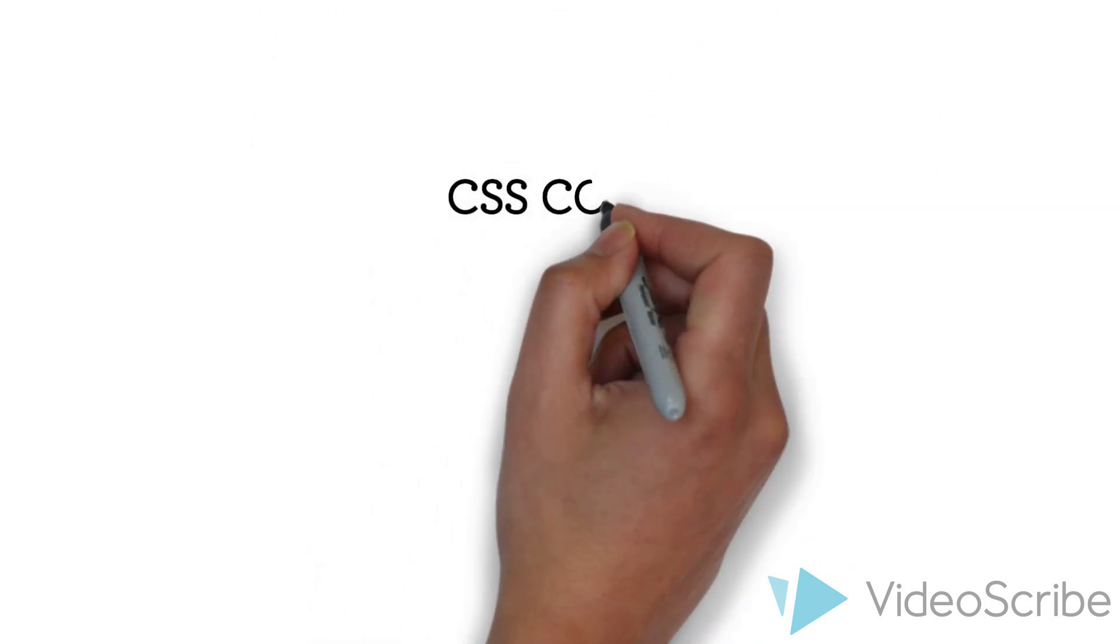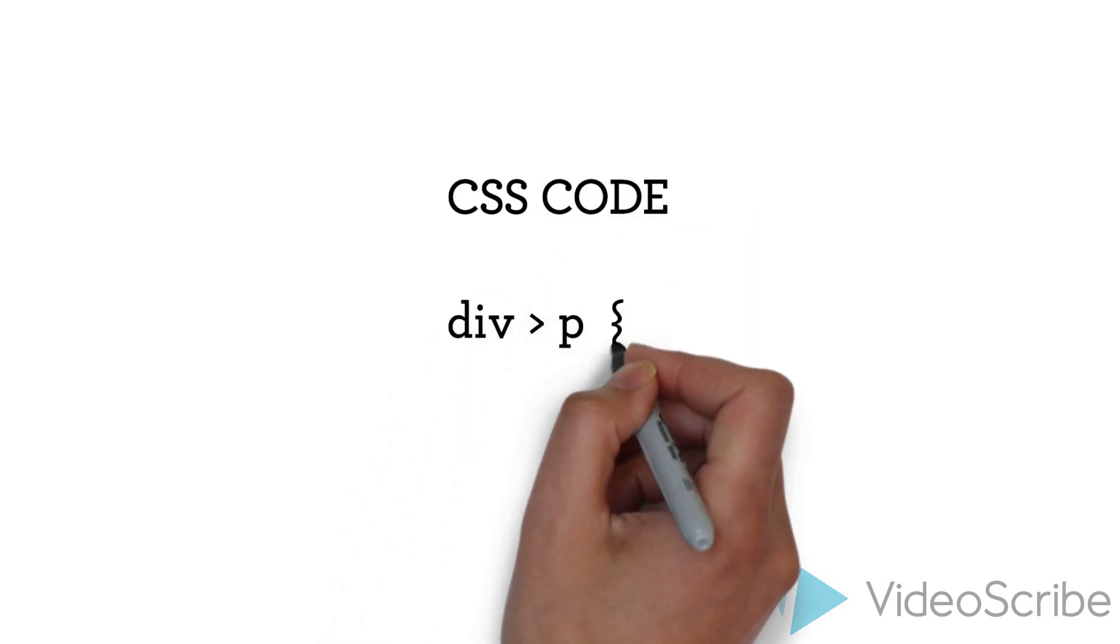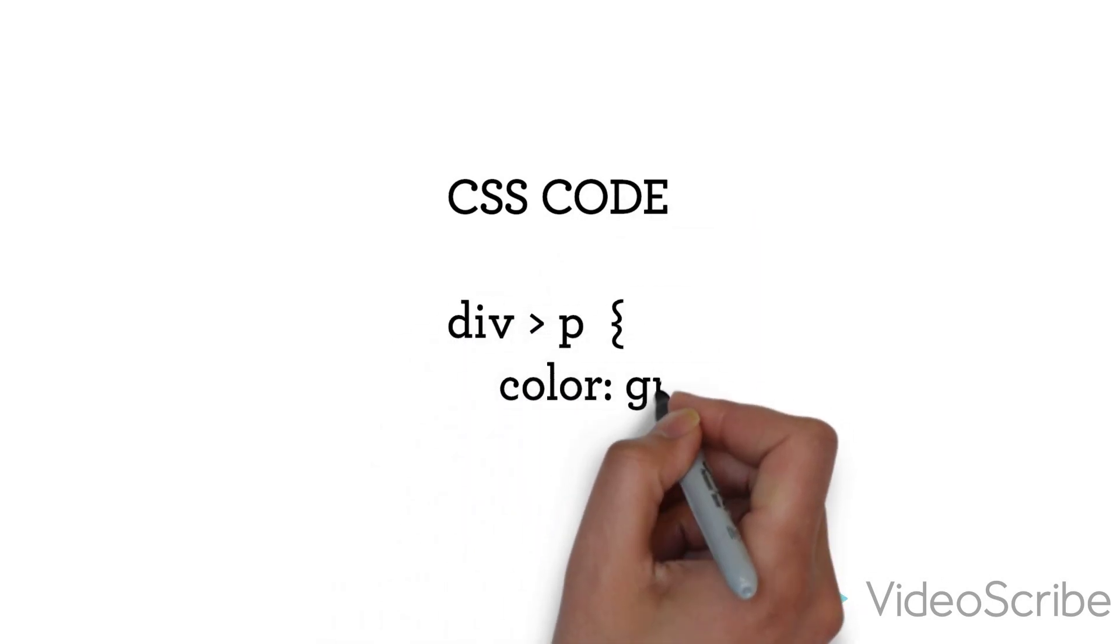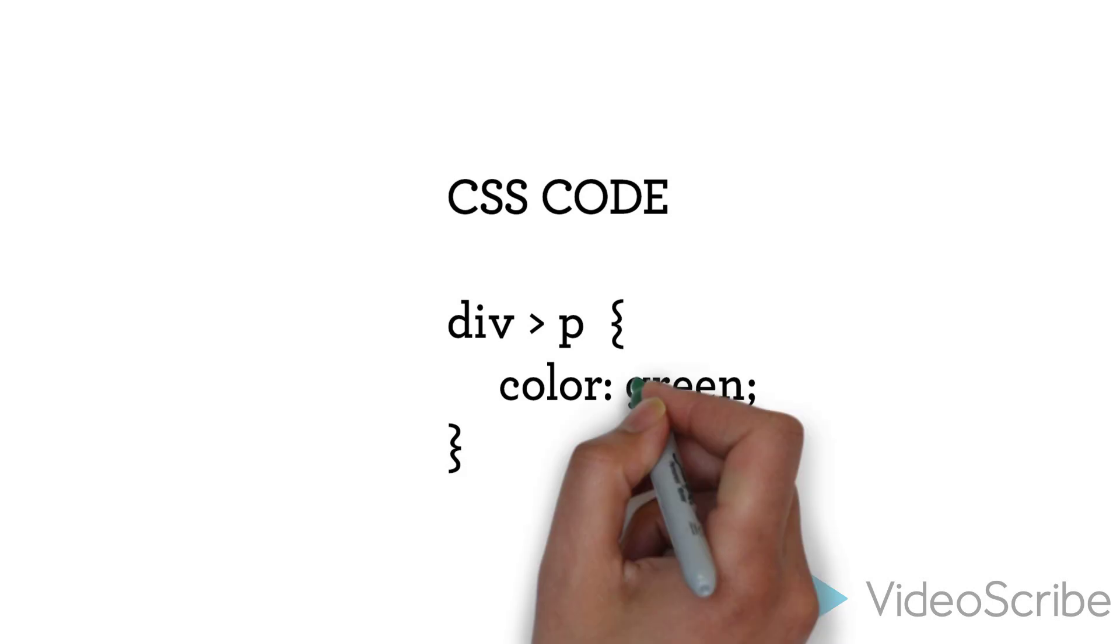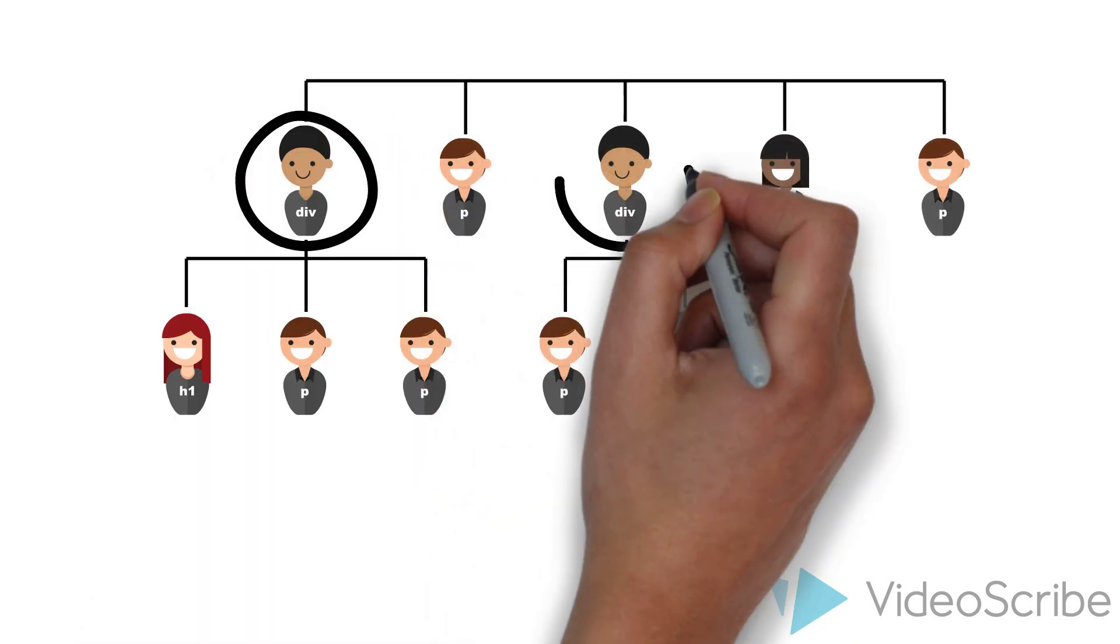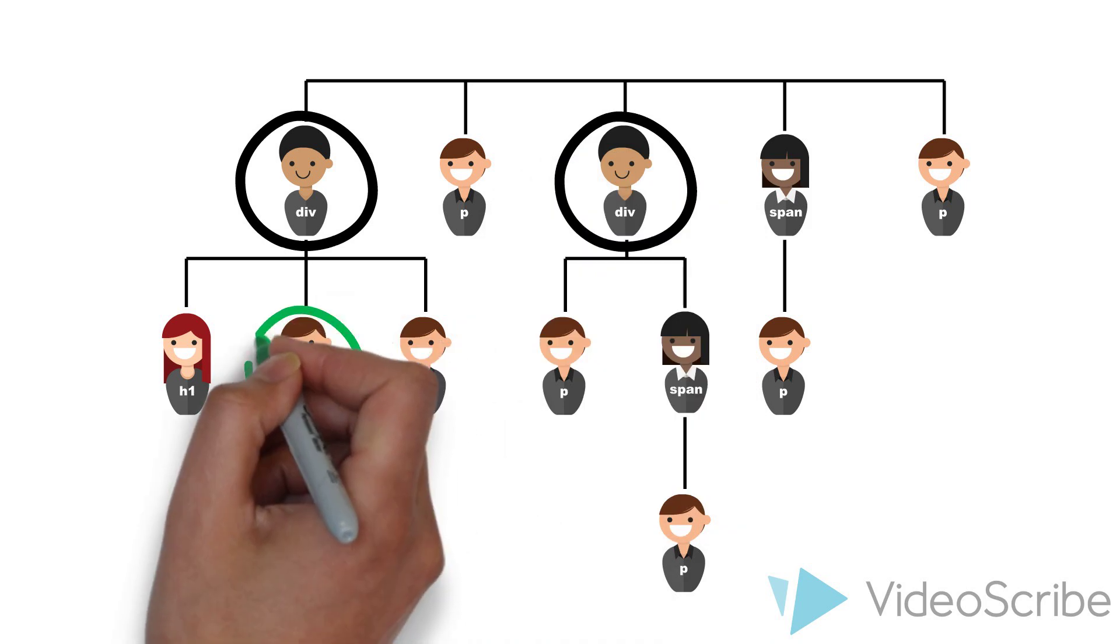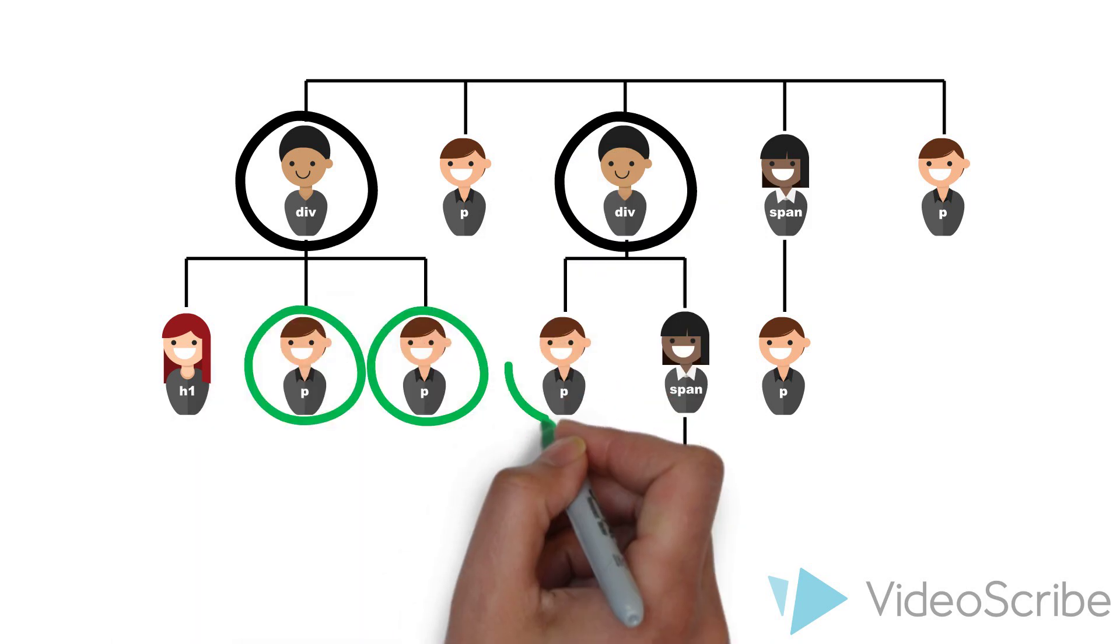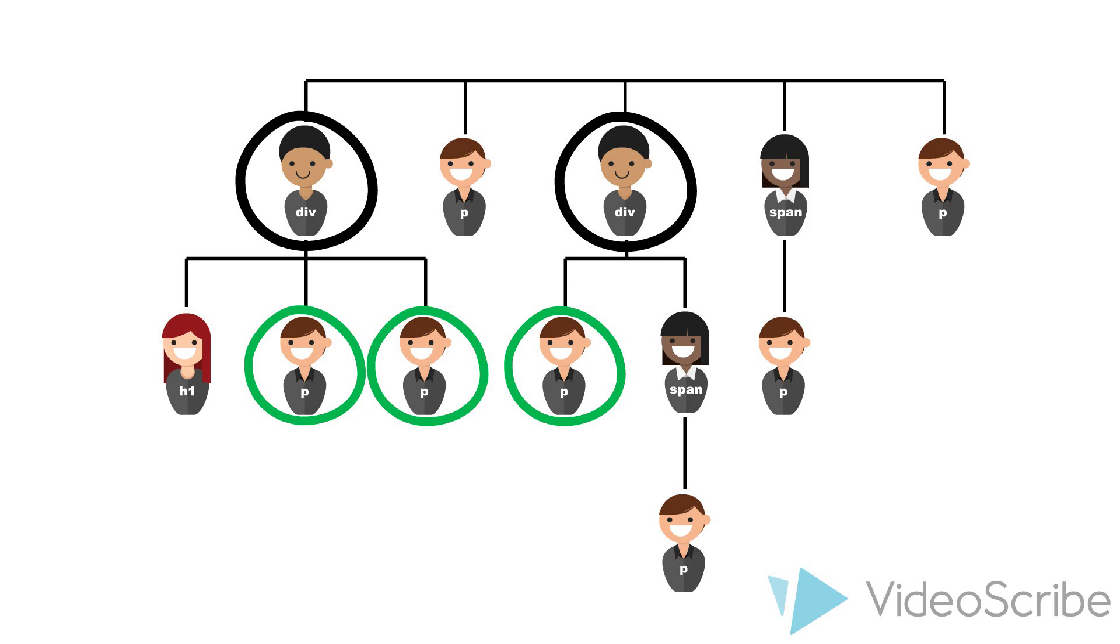So as an example, you could use div greater than p. And again, we want to change the color of the selection to green. Looking at our family tree, this means that first we search for all persons called div and then select everyone who is called p and a child of them. In our example, that means that three persons will now turn green.